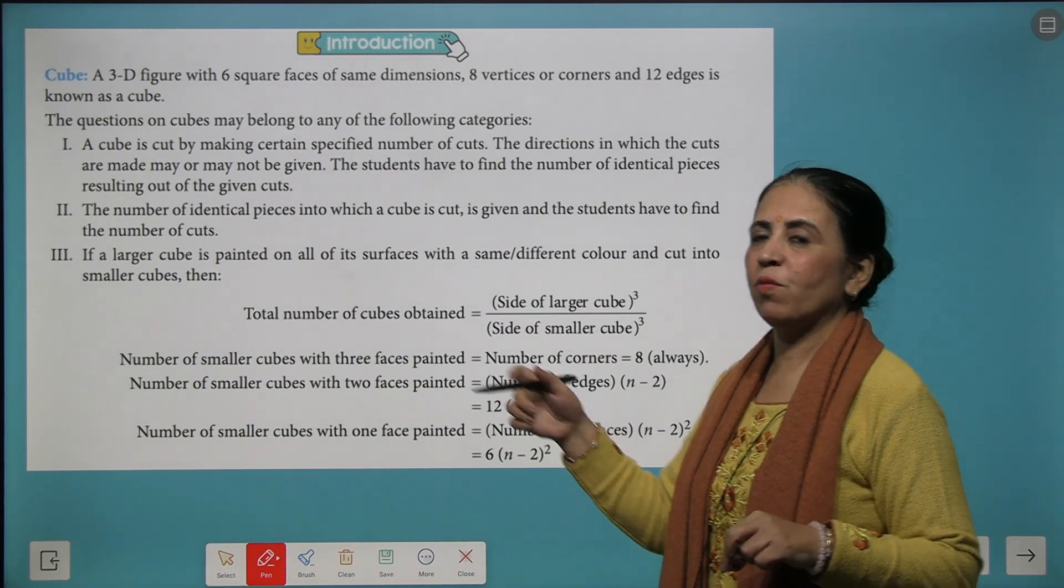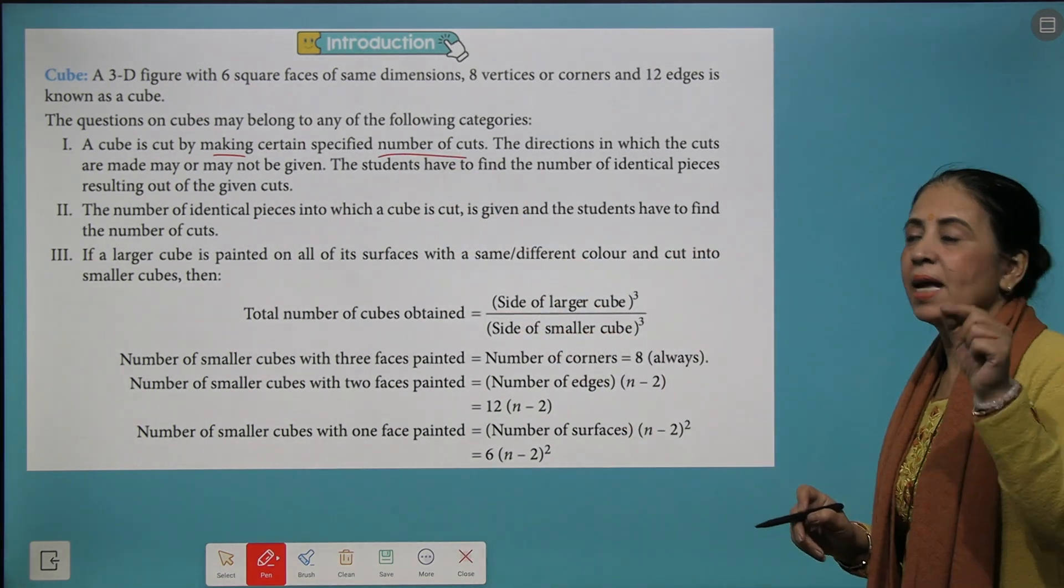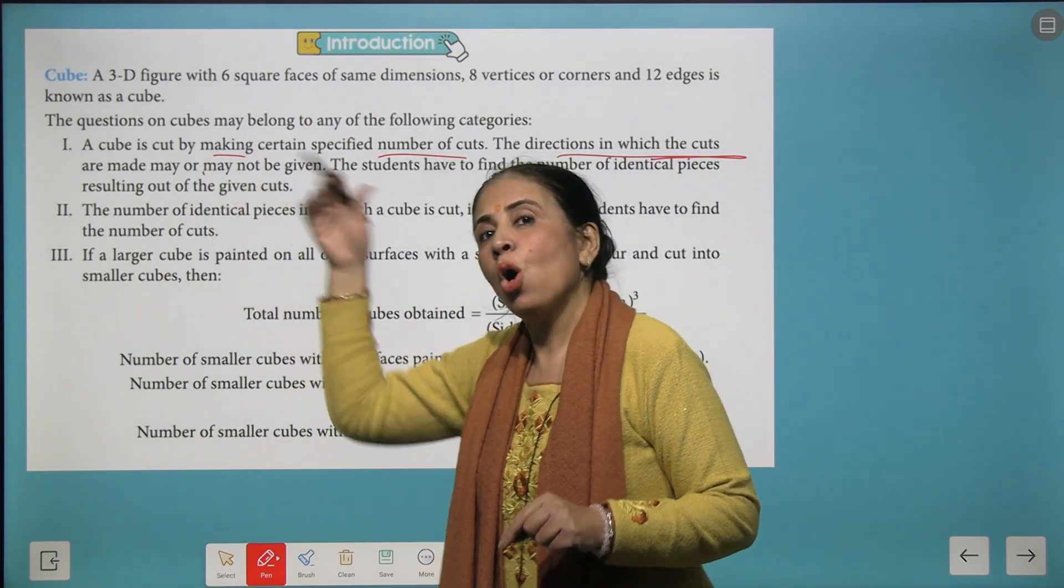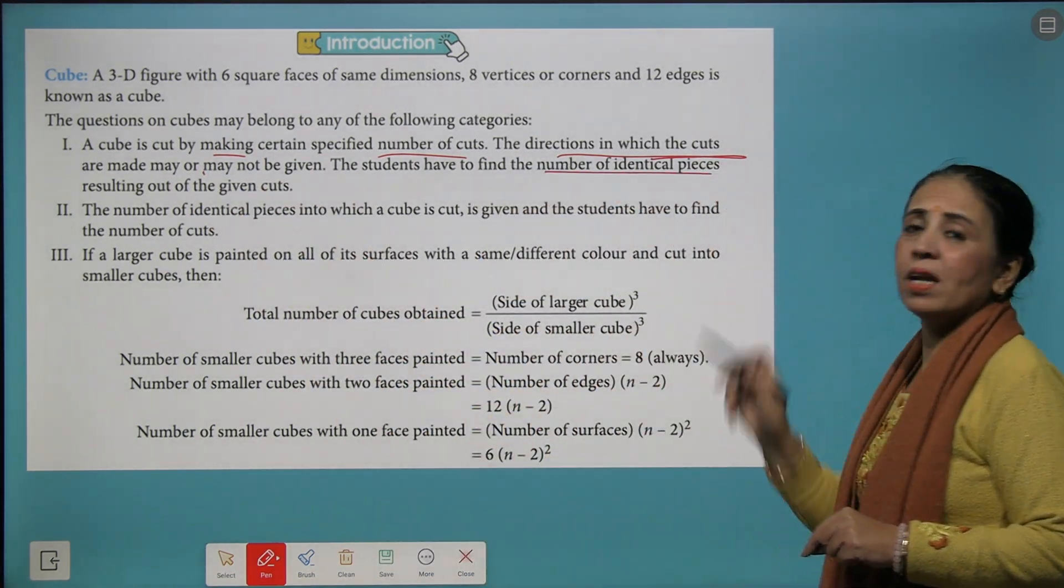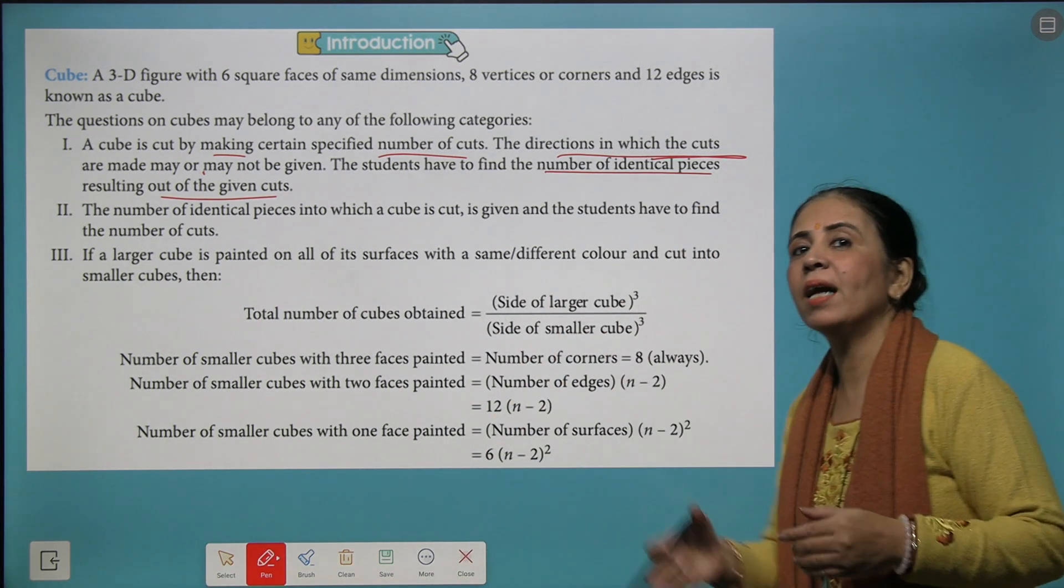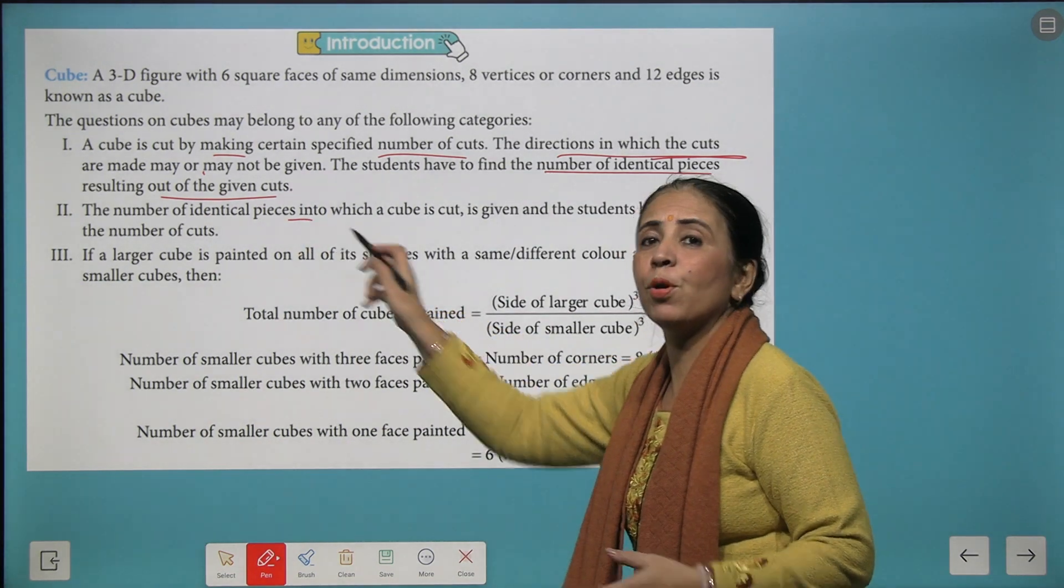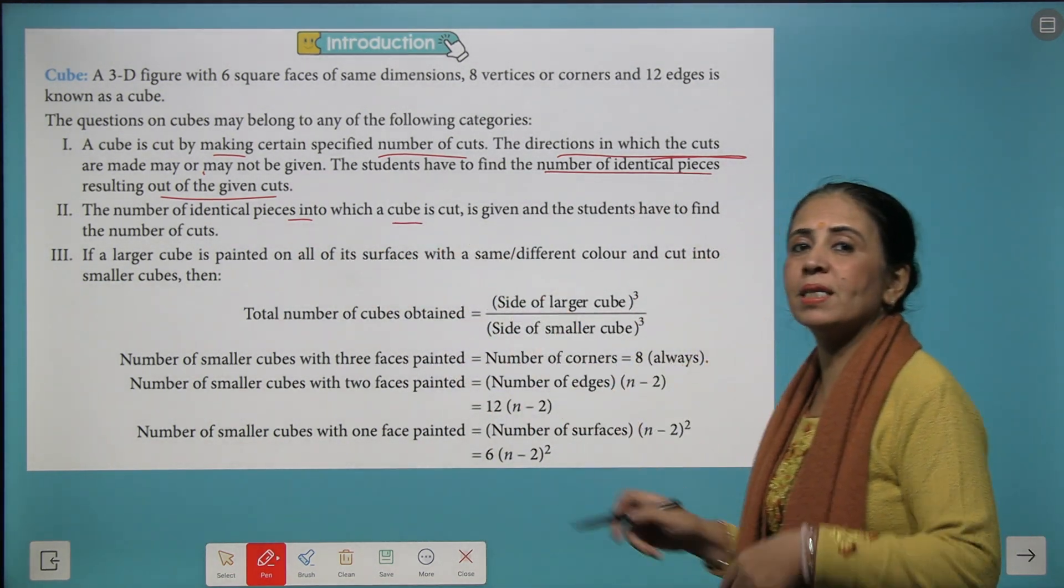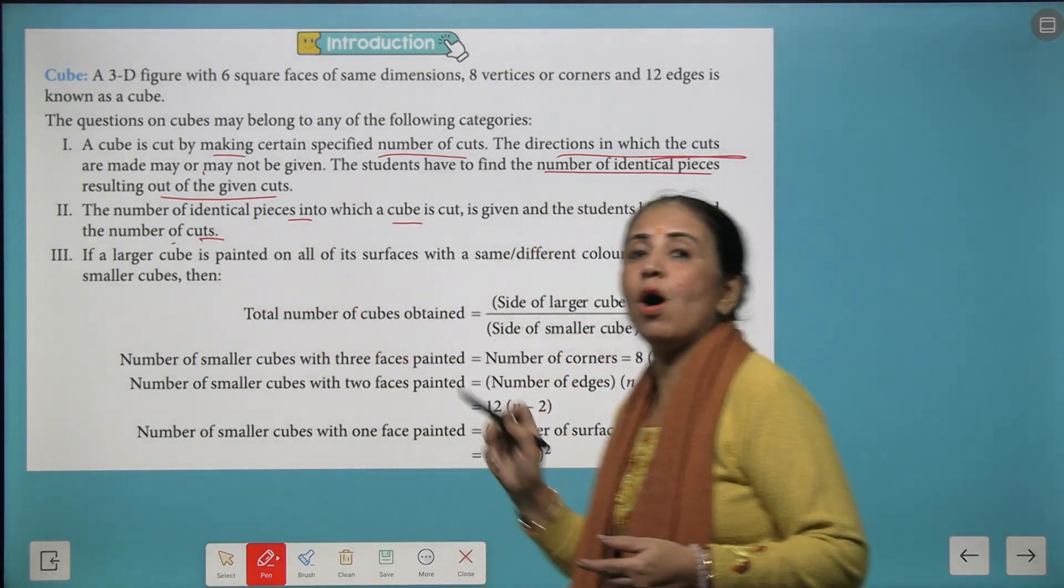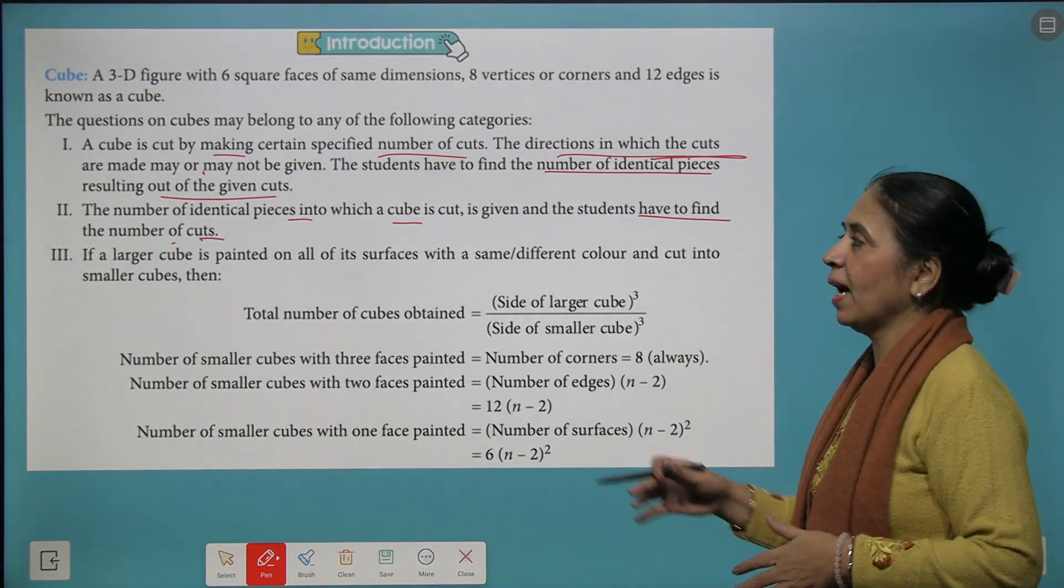Now first category of question will be if a cube is cut by making specified number of cuts and the directions in which the cuts are made may be or may not be given and you have to find the number of identical pieces resulting out of the given cuts which are made on the given cube. The second category is that the number of identical pieces in which the cube is cut is already given and you have to find how many number of cuts were made to get those identical pieces.